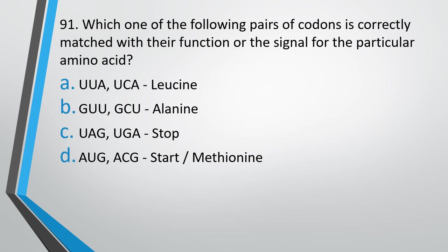Question number 91. Which one of the following pairs of codons is correctly matched with its function or the amino acid it codes for? UAA and UCA code for leucine; GUU and GCU code for alanine; UAG and UGA are stop codons; AUG and ACG are start codons or code for methionine. The correct answer is option C — UAG and UGA are both stop codons.